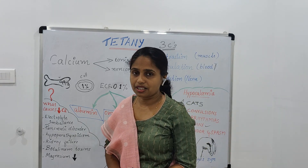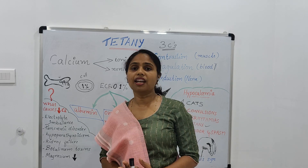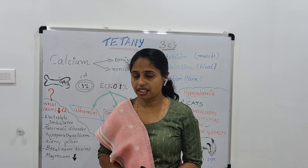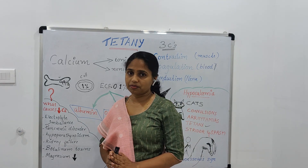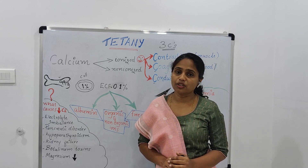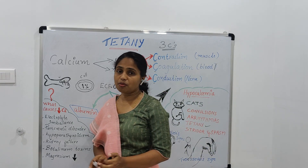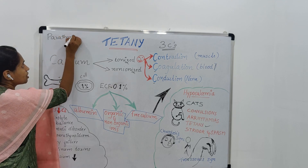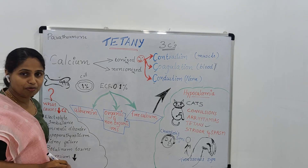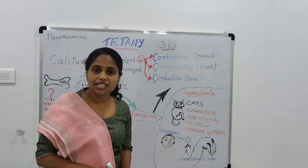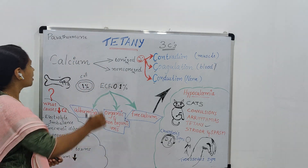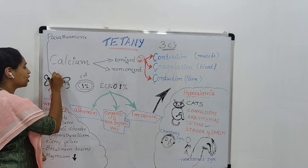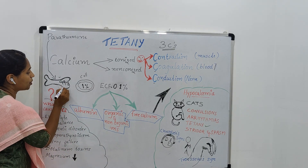The calcium level in our blood needs to be maintained. When the body calcium level drops, parathormone is stimulated. Parathormone is a hormone produced by the parathyroid gland, and it is necessary for calcium and phosphorus metabolism.